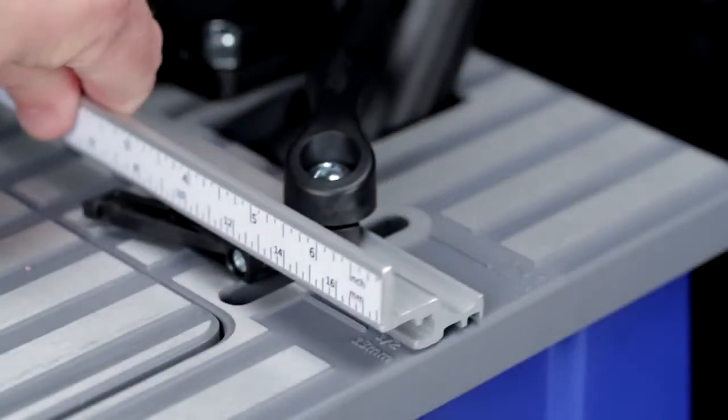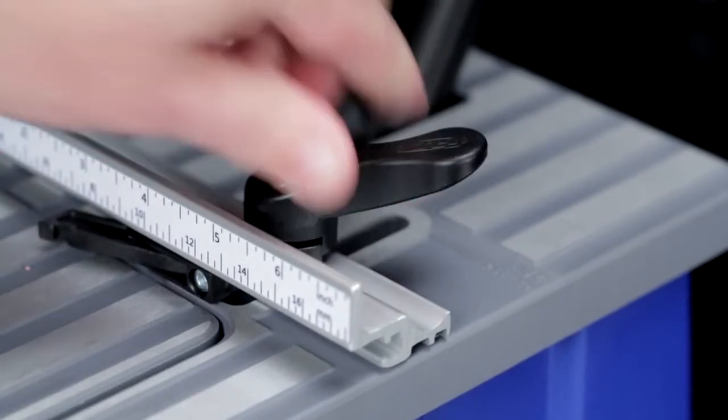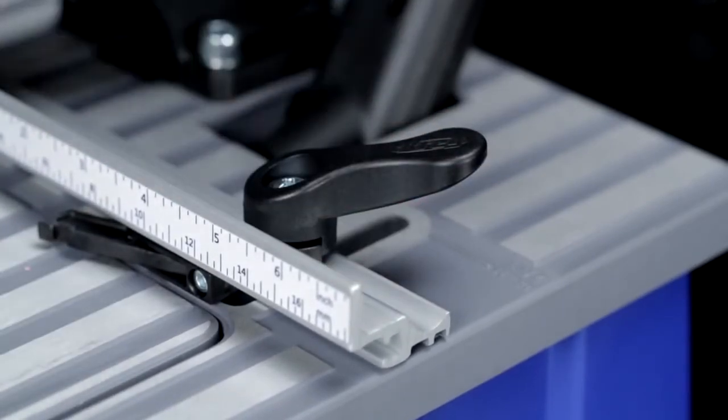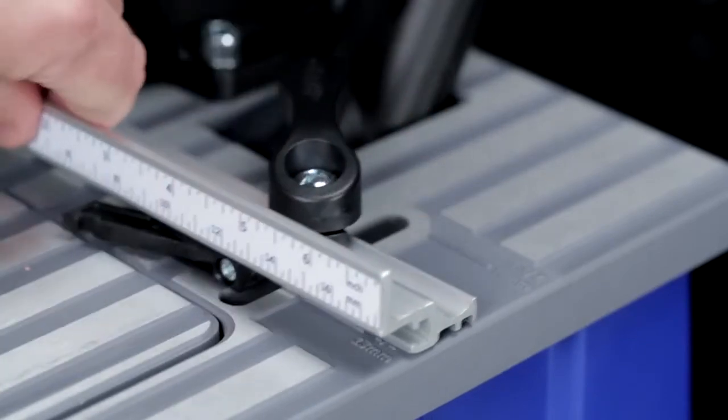Markings in the rigid cast aluminum table make it easy to position the fence for the three most commonly used material thicknesses: half inch, three-quarter inch, and one and a half inch.